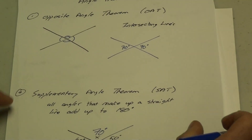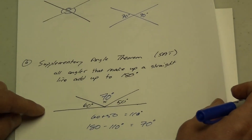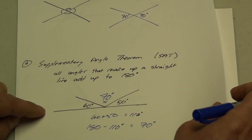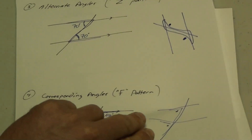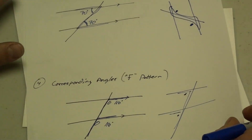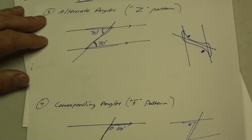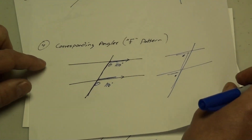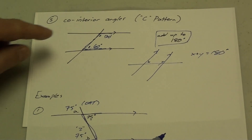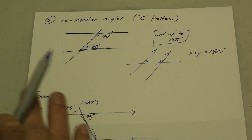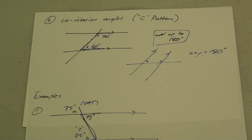We just covered a few angle theorems: the Opposite Angle Theorem, the Supplementary Angle Theorem where angles have to add up to 180 degrees, alternate angles using the Z pattern, corresponding angles using the F pattern, and co-interior angles using the C pattern. Thank you very much.